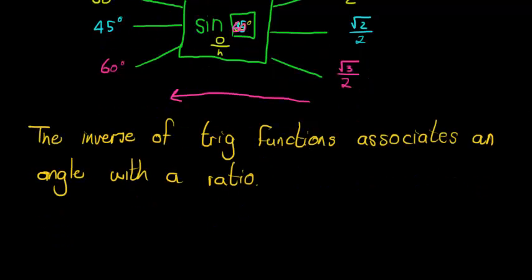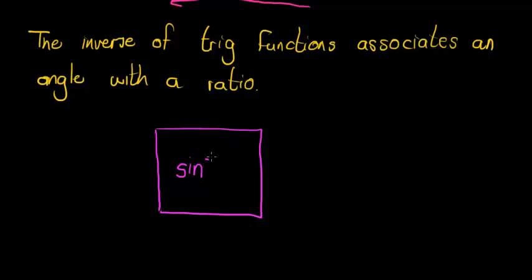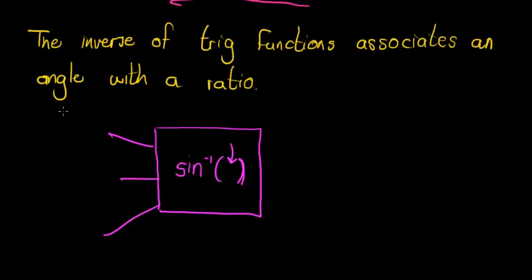So this time in our spider diagram, we have the inverse — and to indicate the inverse of a function, we use a little negative one superscript. It doesn't mean divide by sine; it's just a symbol in maths to indicate the inverse. The old output now becomes the input, so there are now ratios coming in as input. For example, the ratio zero comes in, and the inverse of sine asks: what angle should I use to get zero as opposite over hypotenuse?